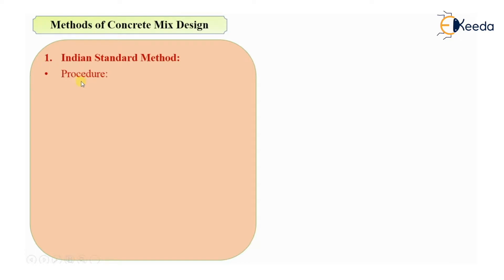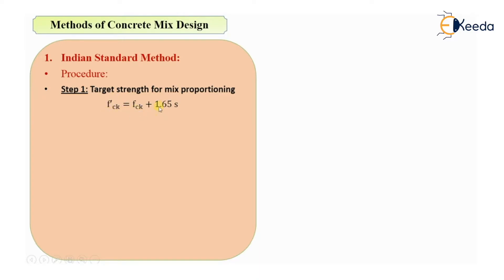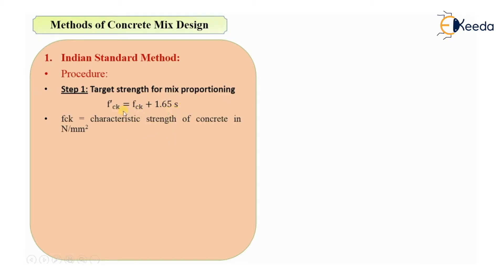Now let's see the procedure of the Indian Standard Method. The first step is to find out the target strength for mix proportioning. The formula for target strength is F'CK = FCK + 1.65 × S, where FCK is the characteristic strength of concrete in Newton per mm². For example, if designing a concrete mix of M40, the FCK value will be 40 Newton per mm².